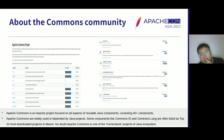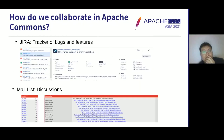Here is a list of the top 10 most downloaded Maven projects. You can see that rank 6 is Apache Commons IO and rank 9 is Apache Commons Lang. This shows that Apache Commons is the most widely used Java library in the Java ecosystem.